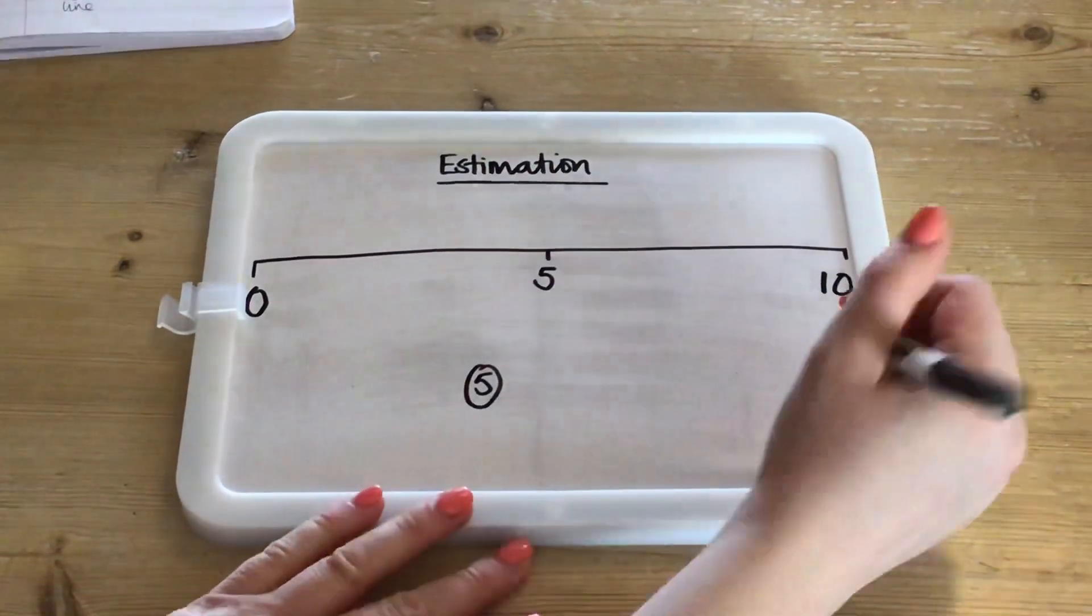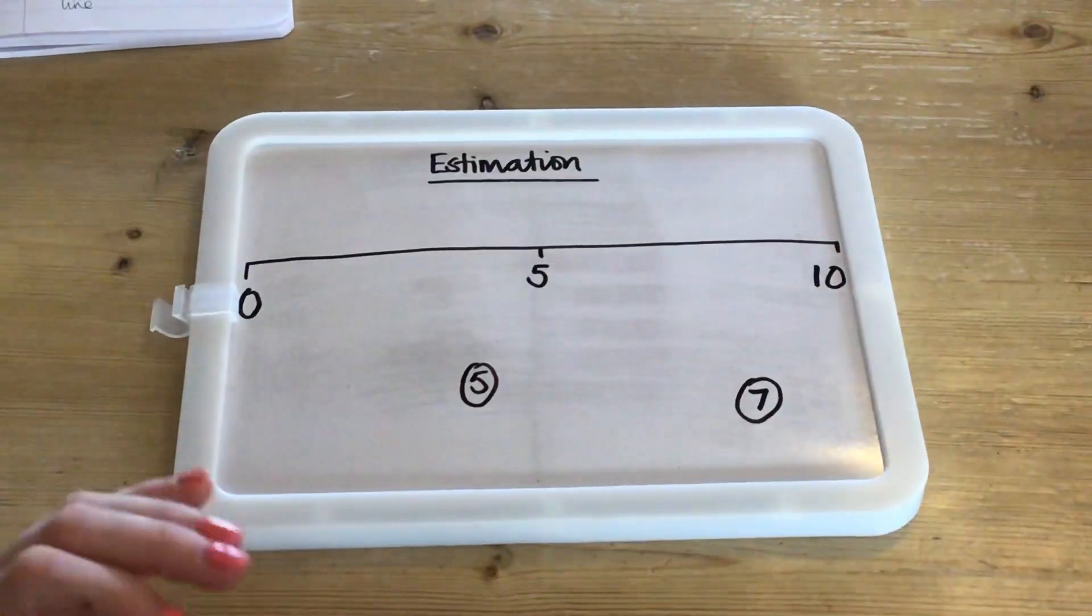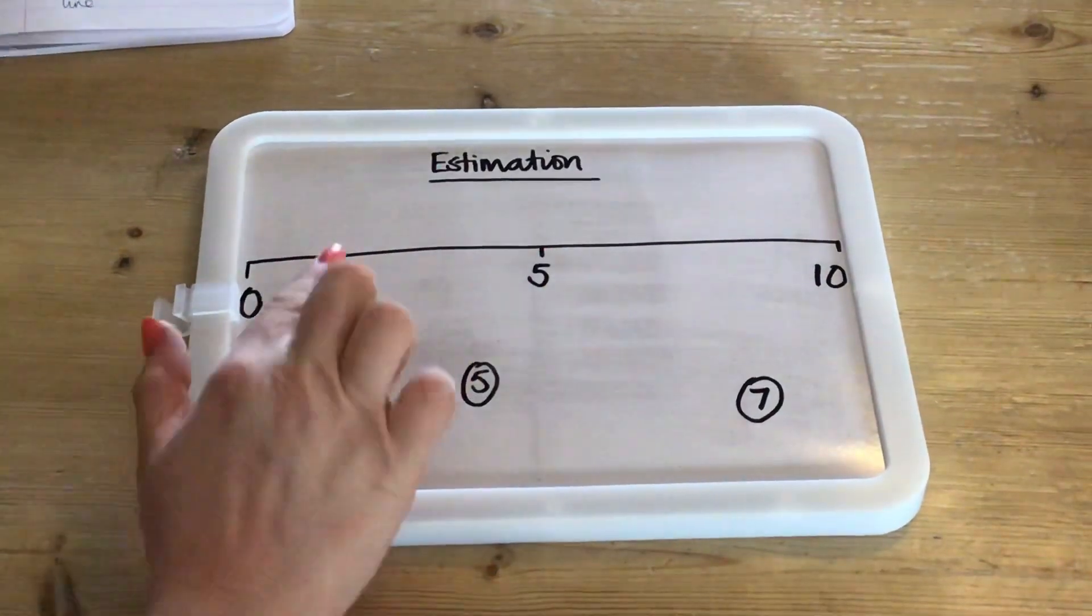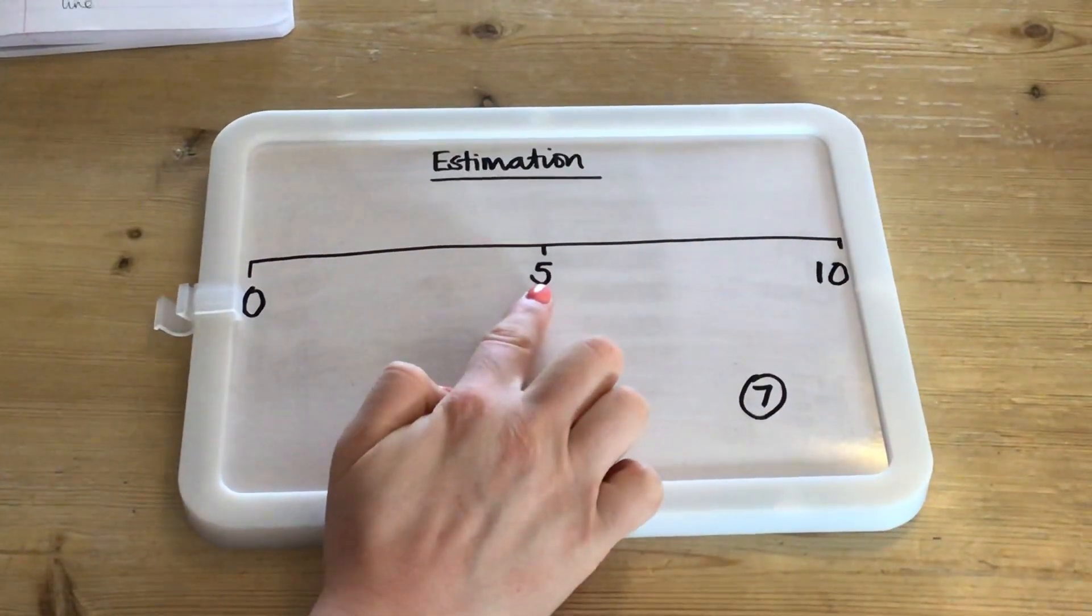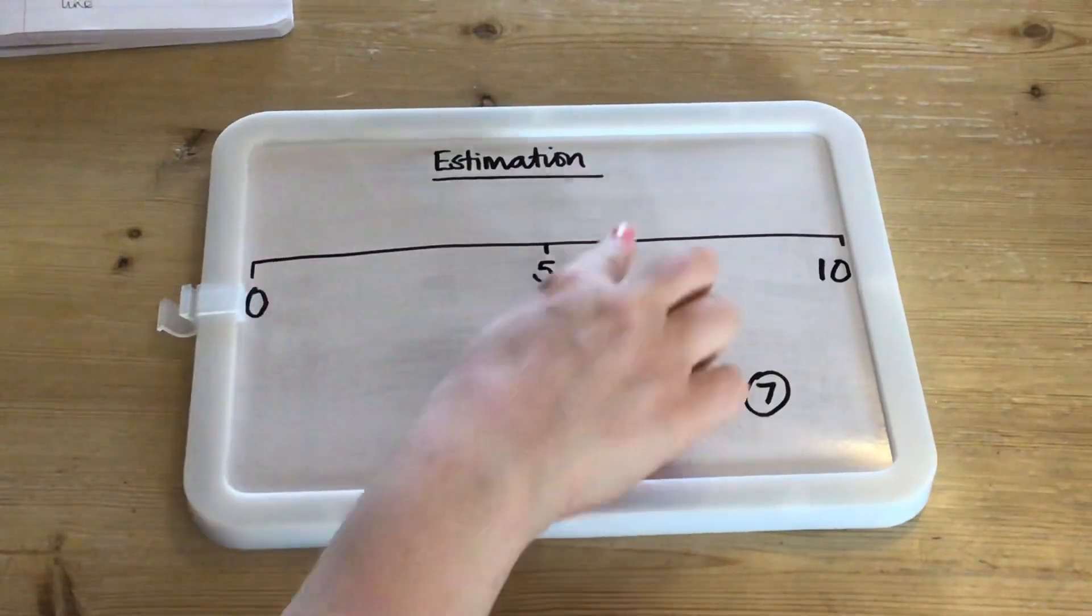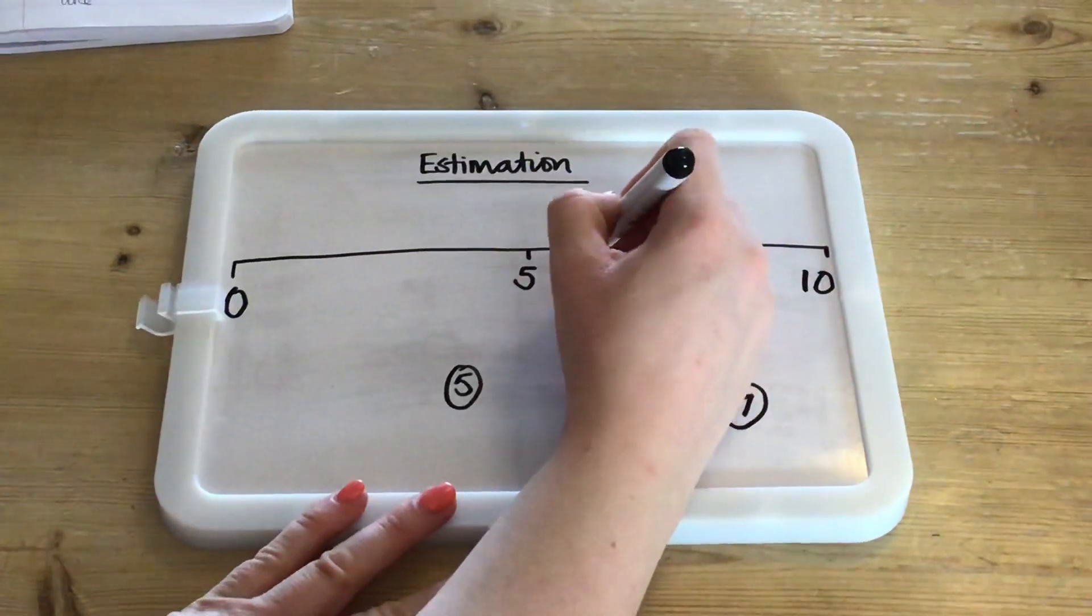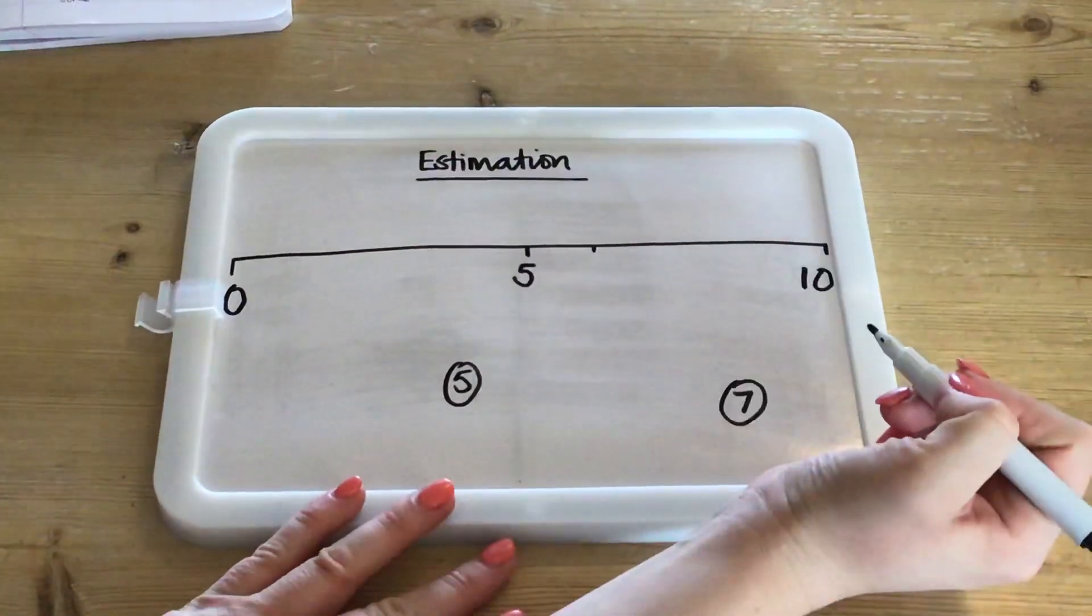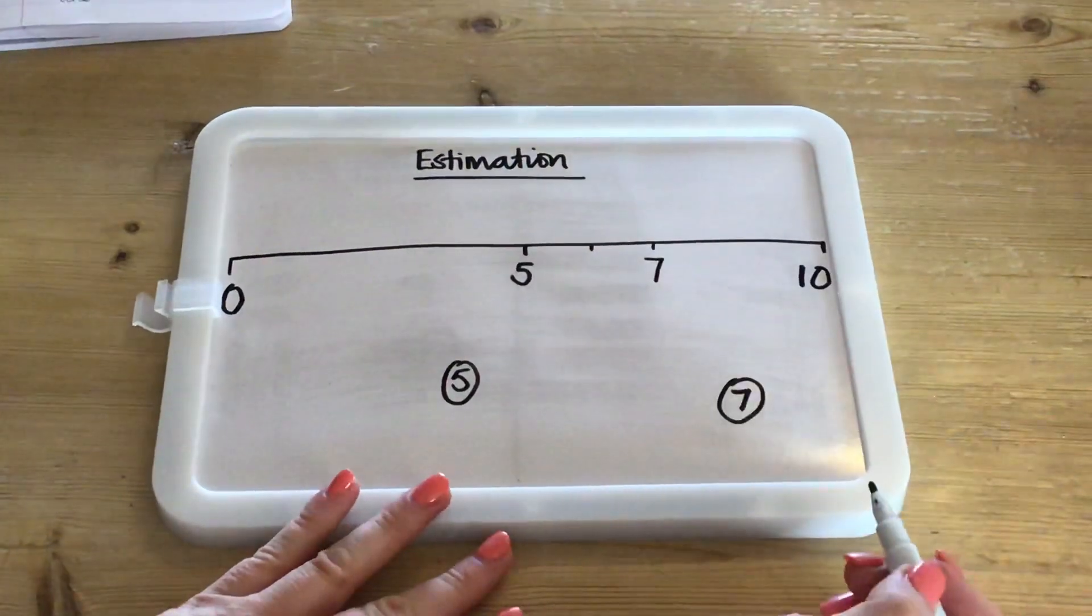Now if you're thinking about where the number 7 would go on the number line, we're going to have a look and see where our 5 is. We know that 7 comes 2 after 5 so it's not going to come in this part of the number line, it's going to come over here. So being quite proximate, 6 will probably go about here, 7 would probably go around there.